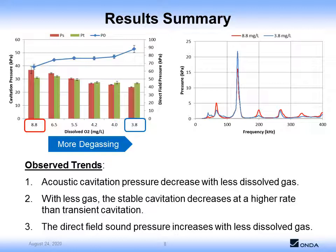A third trend that we found interesting was the fact that the direct field sound pressure — the line in blue — increased with less dissolved gas. As a sanity check, we took a closer look at the lower level spectra and confirmed the shape. Specifically, the fundamental peak at the drive frequency of 132 kHz is in fact higher in amplitude with less gas, while the harmonics are lower. The measurements are repeatable, and there are error bars in each of the plots, all within 10% one sigma.